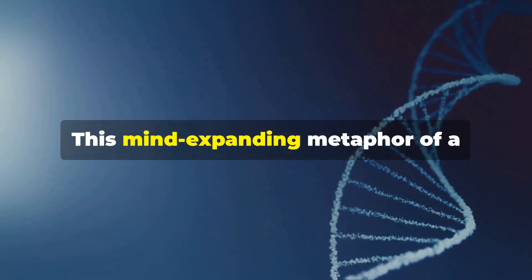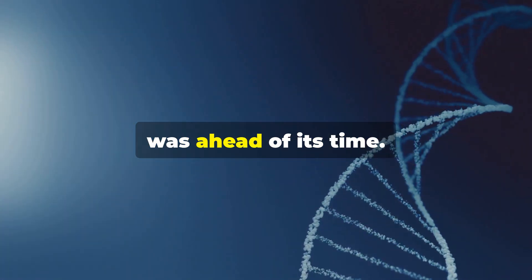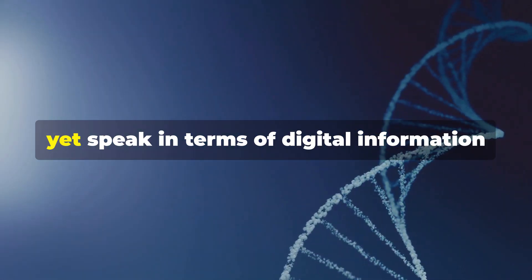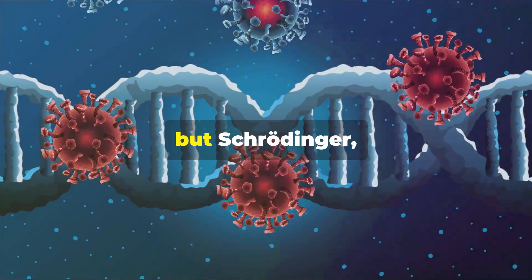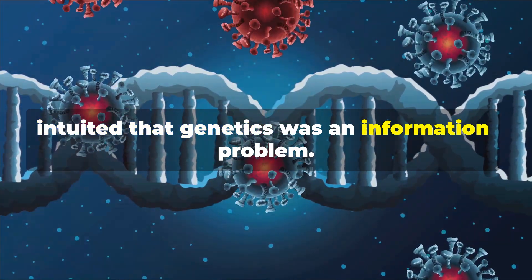This mind-expanding metaphor of a hereditary code script, essentially a genetic instruction book, was ahead of its time. Biologists of the 1940s didn't yet speak in terms of digital information or codes, but Schrödinger, coming from physics, intuited that genetics was an information problem.